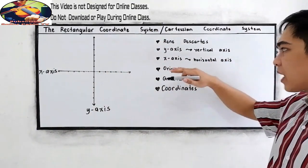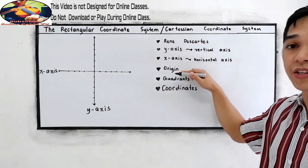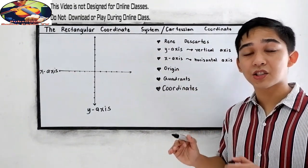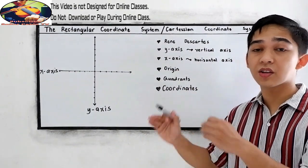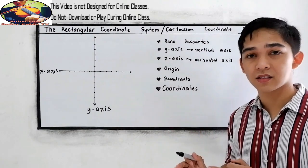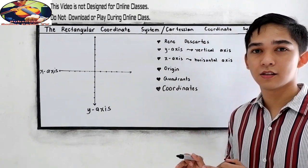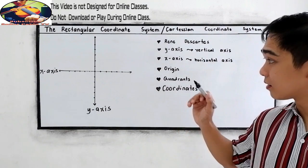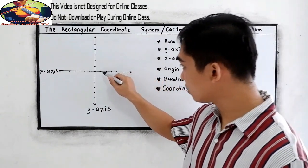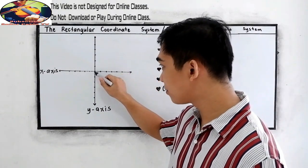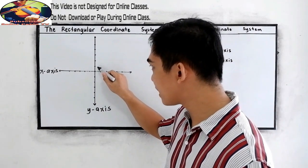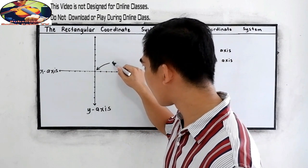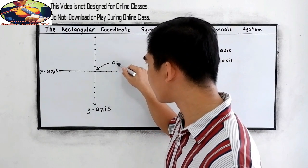Next, the next term is the origin. The origin is the intersection of the horizontal axis and the vertical axis. So, where is our origin? It is the intersection — we have a point here that is our intersection. Therefore, this is our origin.